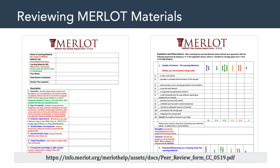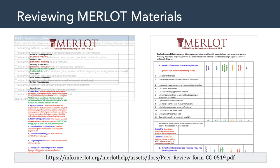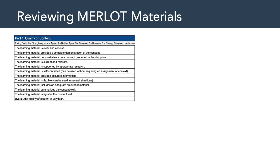I wanted to talk about the Merlot peer review report form. It's a bit of an eyesore, but despite the primary colors that are hurting your eyes right now, there's actually really good information in it. I will share through a link in Canvas how I have modified this review form. The Merlot group has argued that there are three areas to consider when reviewing multimedia and other educational learning objects. The first area is the quality of content — is the learning material clear and concise? Is it current and relevant? Is it supported by appropriate research?